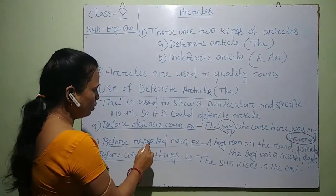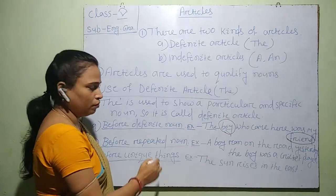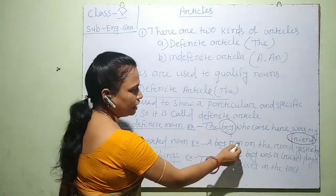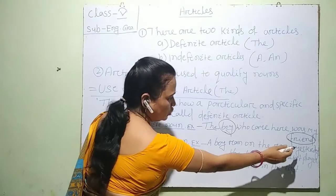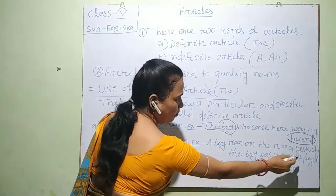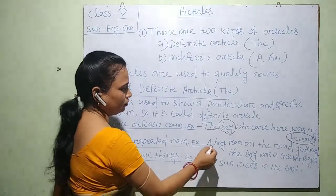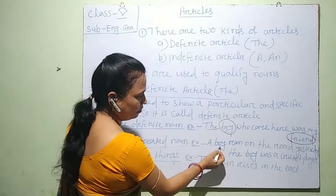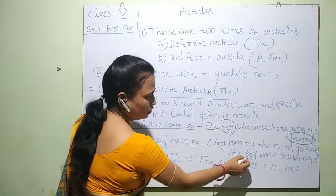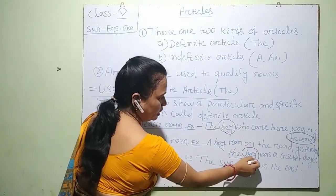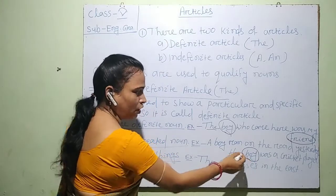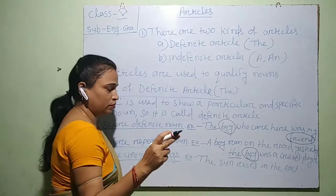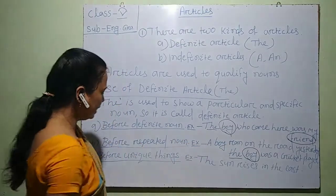We also use 'the' before a repeated noun. For example: 'A boy ran on the road yesterday. The boy was a cricket player.' Here I have used 'the' before the word 'boy' because the word 'boy' is repeated two times.